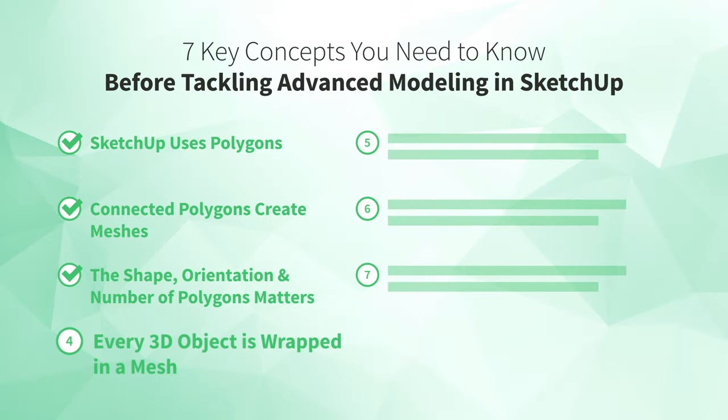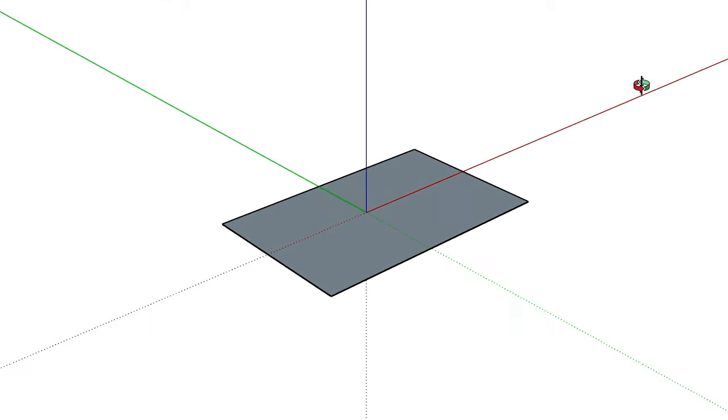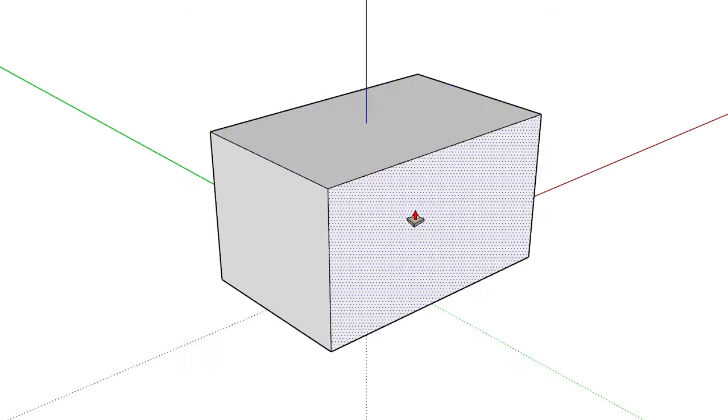Number four: every 3D object is wrapped in a mesh. Let's say you need a simple box. That's pretty straightforward. Just draw a rectangle and push-pull it into a box. But what if you want to give the box a slight twist? To figure out how to do that, you need to think of the box as being wrapped in a mesh.